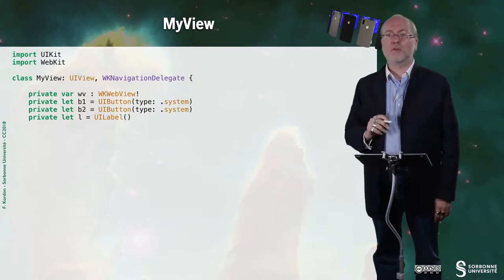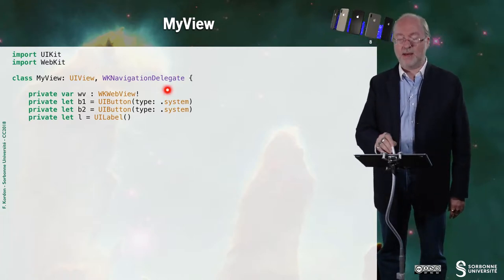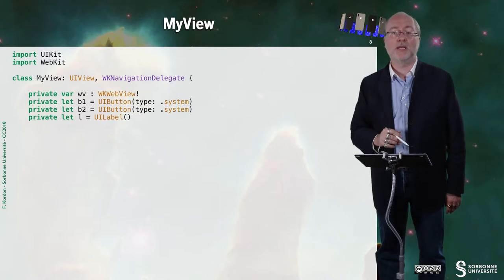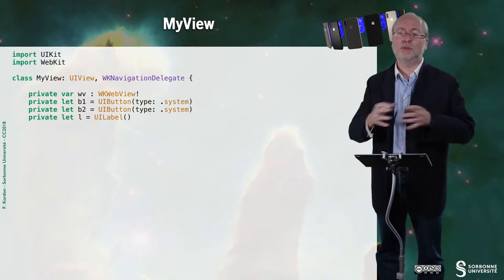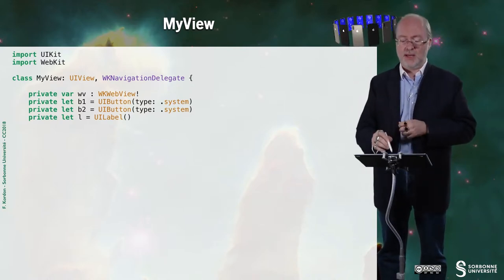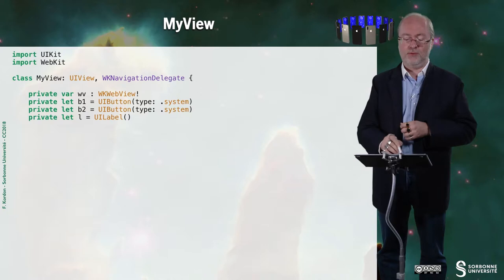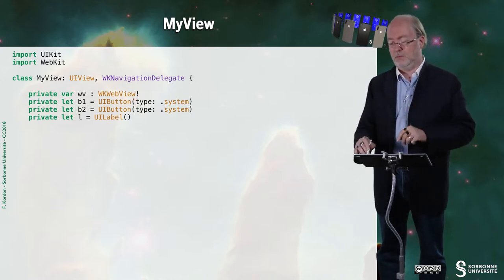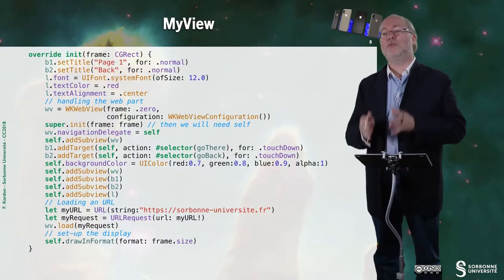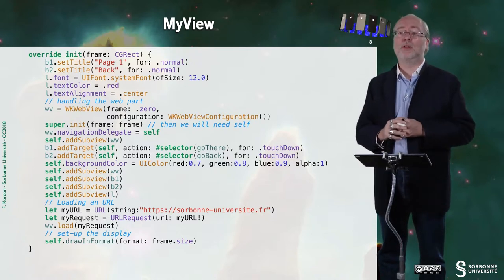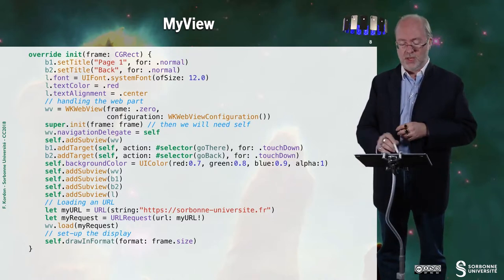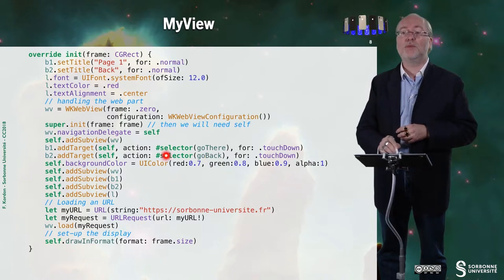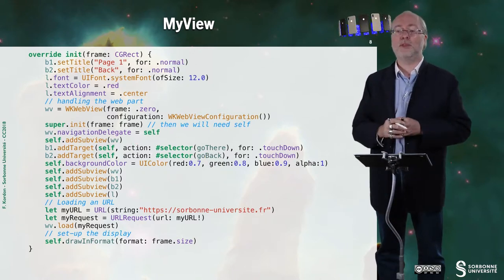MyView is a bit more complex. You see that I embed WKNavigationDelegate because I want to handle the monitoring of what's going on in terms of loading web pages. I have a few buttons, a WKWebView, and a label. Then I build this view as you saw in the demos. The two buttons are associated with some methods.